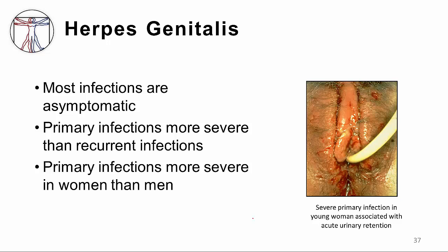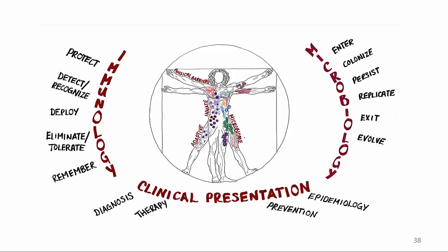Most infections caused by herpes, even the first infection, are without symptoms — the person doesn't even know they've been infected. However, when associated with symptoms, primary infections tend to be much more severe than recurrent infections. Primary infections are especially severe in women compared to men, exemplified by a picture of a woman with genital lesions so severe that she needed to be catheterized to release urine from her bladder.